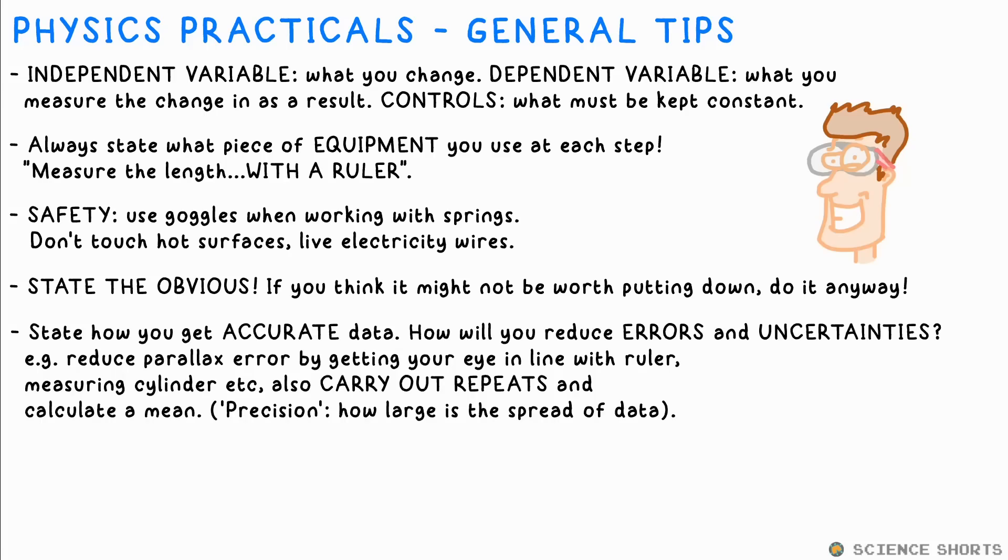Talk about the accuracy of measurements. How will you reduce errors and uncertainties? For example, you get your eye in line with the measurement when using a ruler or measuring cylinder to reduce parallax error. Another classic thing you should put down is multiple or repeat measurements or readings to calculate a mean from.